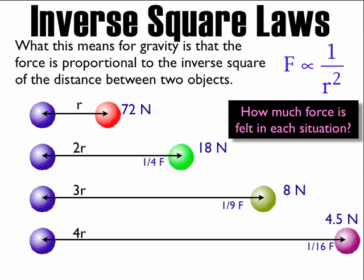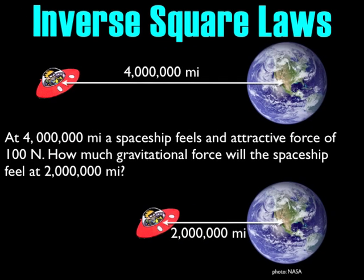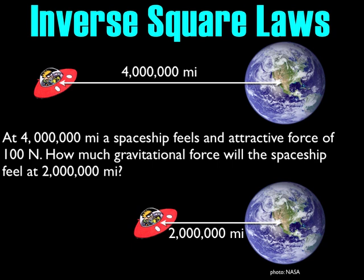Now let's do an example where the factor of change isn't given to you and you've got to determine it. At 4,000,000 miles, a spaceship feels an attractive force of 100 N. How much gravitational force will the ship feel at 2,000,000 miles? I'm not going to convert to SI units - I can just use these numbers because I'm looking for factors of change.